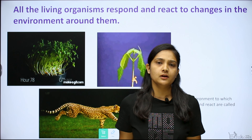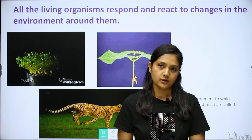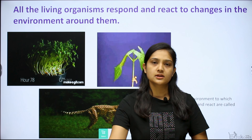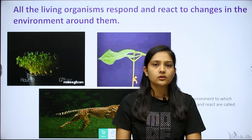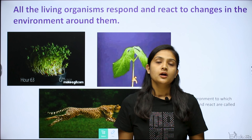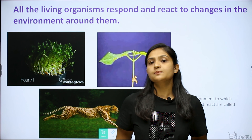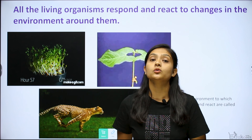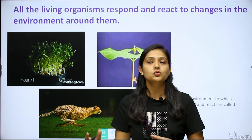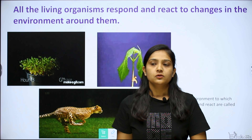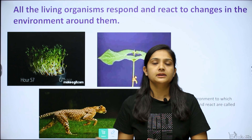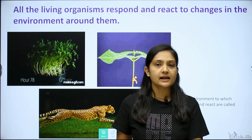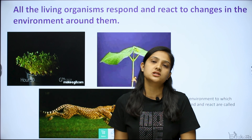Any living organism, take plants for example. How do plants react or respond? A plant cannot move from one place to another — plants are stationary. So they react and respond through their growth. They grow towards the stimuli. The direction of their growth shows their reaction.